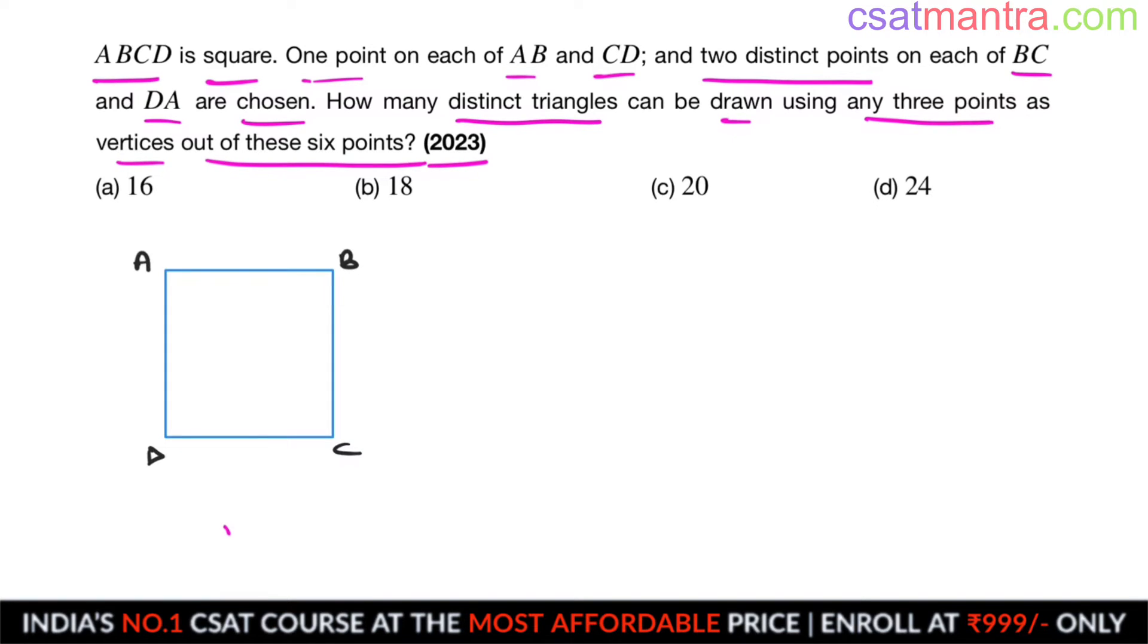We have a square ABCD. One point on each of AB and CD, and two distinct points on each of BC and DA. Two separate points, not coinciding. So how many points we have? Six points.